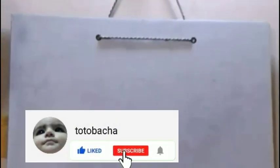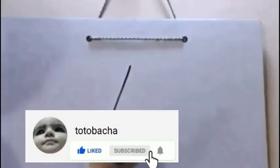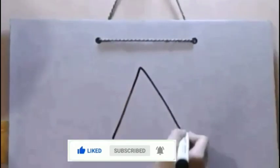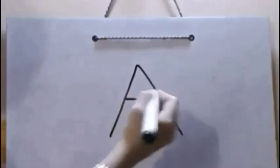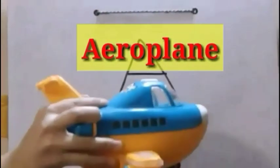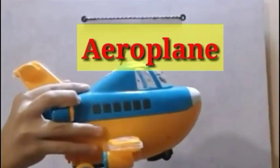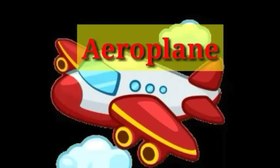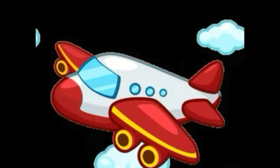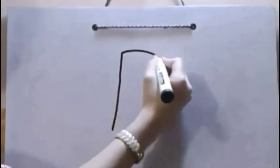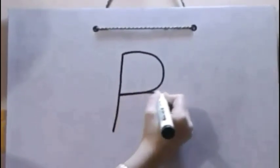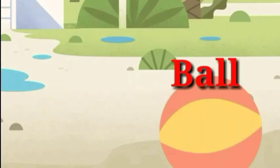Today we can learn A to Z with objects. Now start. A, A for aeroplane, aeroplane. Now we write B, B for ball.